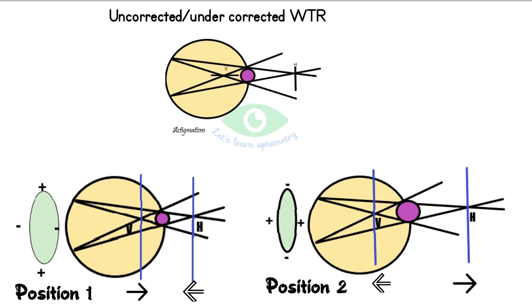And the circle of least confusion becomes bigger. Note that for both positions, the circle of least confusion is on the retina as the spherical equivalent of JCC is zero. So when we present the patient with these two positions, they will obviously prefer position one and report that the target is more distinct in that position.